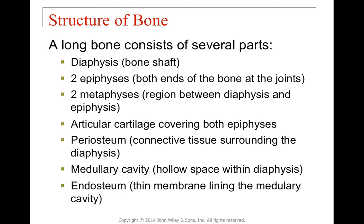Let's talk about the anatomy of the bone. The bone shaft is called the diaphysis. At the ends of the bone we have two epiphyses, one on each end, where it articulates with another bone at a region called the joint. Connecting the diaphysis and epiphysis is the metaphysis region. At the end of the epiphysis we have articular cartilage, leading into the joint. We also have periosteum — connective tissue surrounding the diaphysis. Inside the diaphysis is the medullary cavity, lined by a membrane called the endosteum.